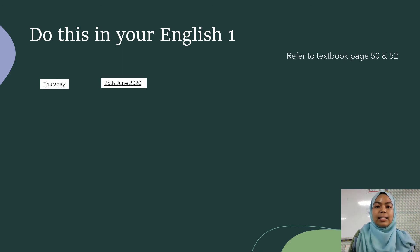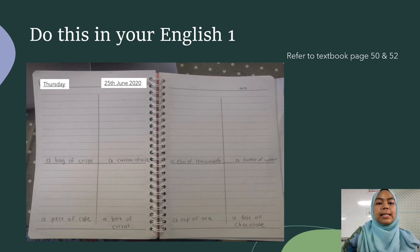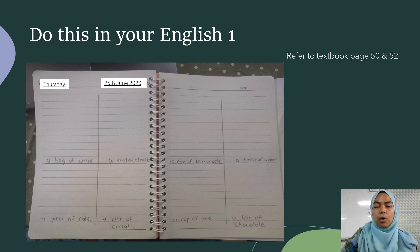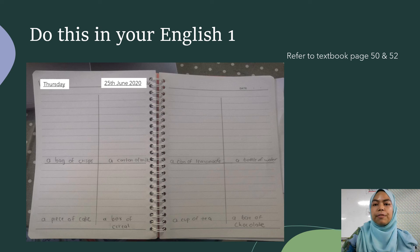And the last activity, you have to do this in your English exercise book. It's a very easy activity. You need two pages — make it into four boxes and write down all the vocabulary we learned: a bag of crisps, a carton of milk, a piece of cake, a box of cereal, a can of lemonade, a bottle of water, a cup of tea, and a bar of chocolate. Then draw them in the boxes. You can refer to textbook pages 50 and 52.